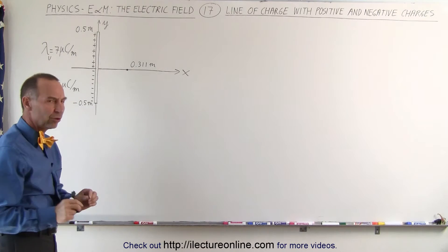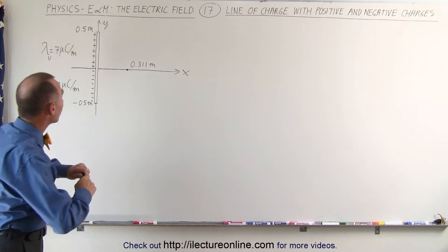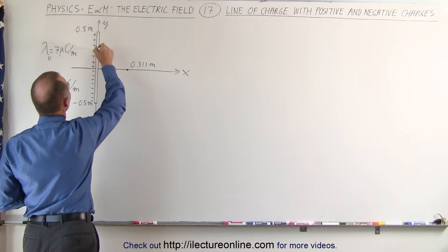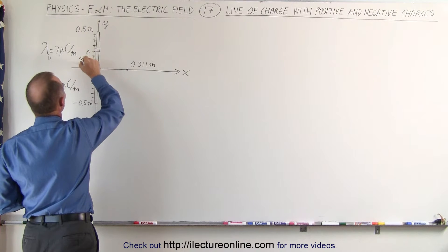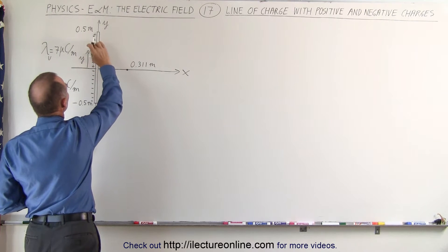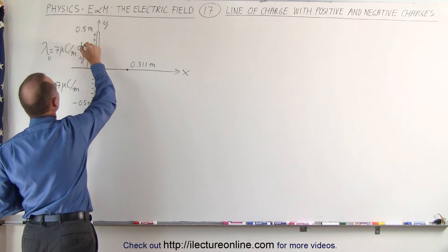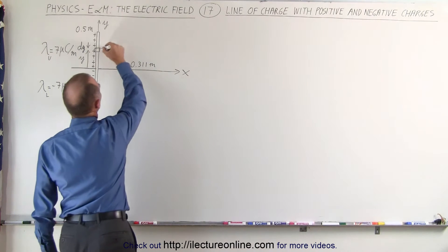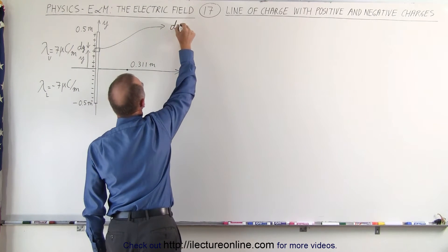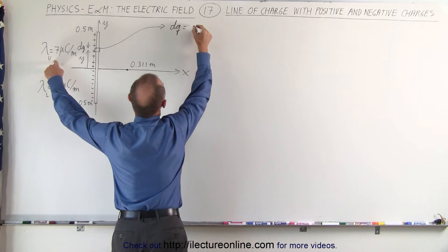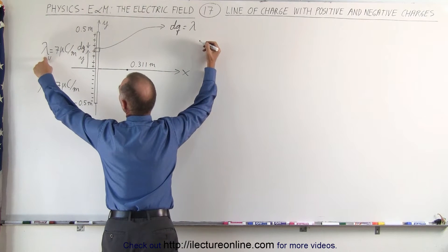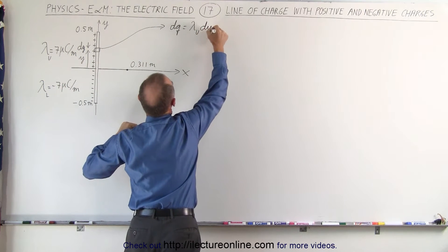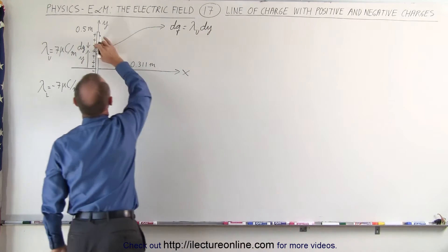How do we do that? Well, there is some symmetry that will help us out. We're going to take an arbitrary segment at a distance y above the origin — a small dy segment — and that will contain a small amount of charge dq. We can define dq by multiplying the charge density at the upper end, lambda upper, times dy. So the linear charge density times the length gives us the charge of that small segment.